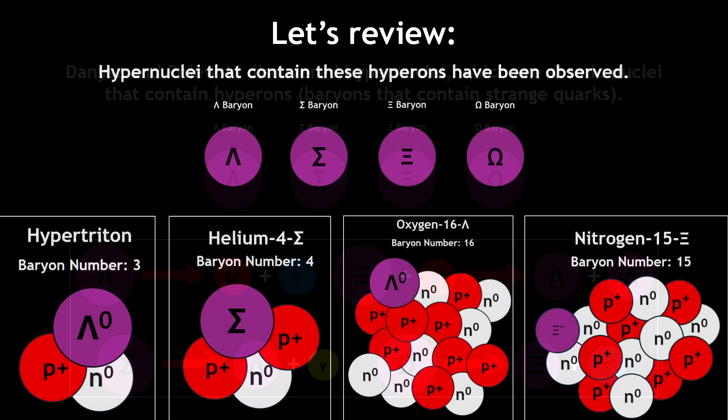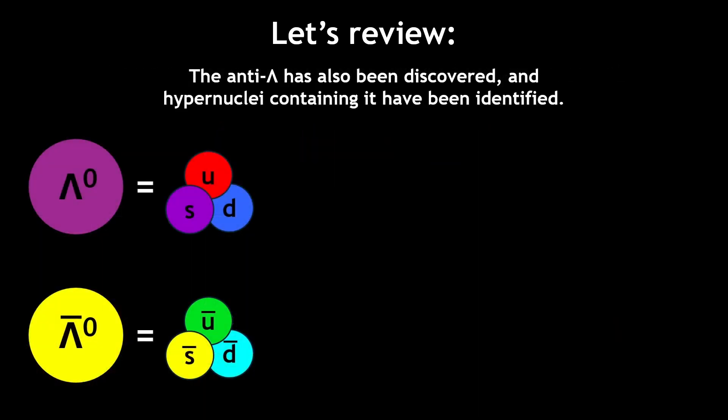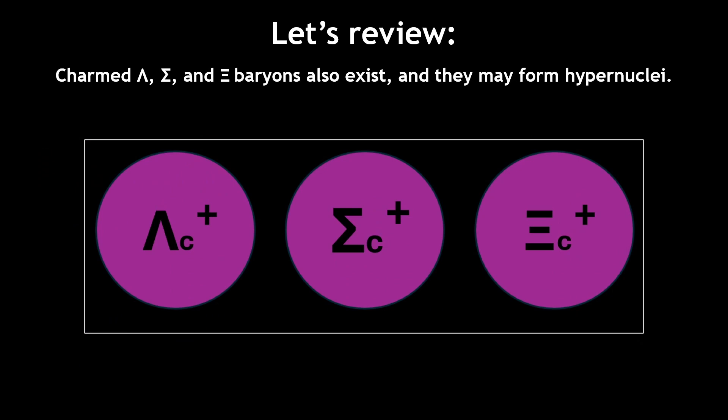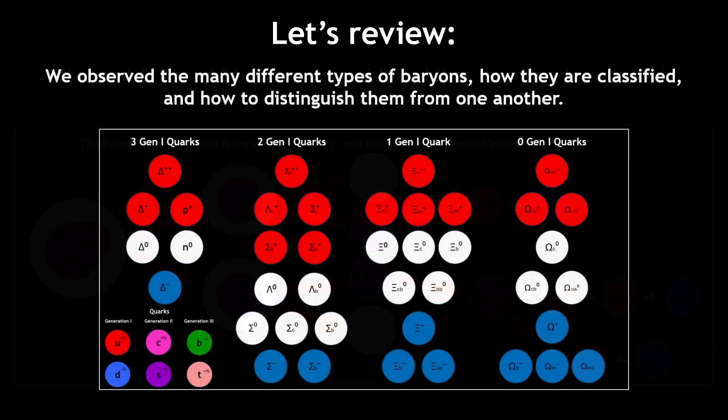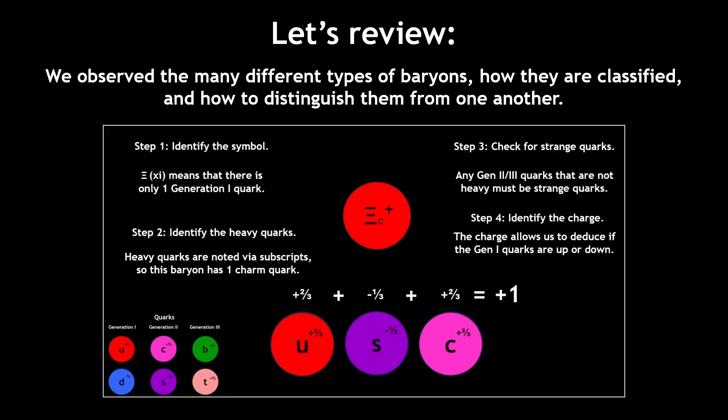Hypernuclei that contain these hyperons have been observed. The anti-lambda baryon has also been discovered, and hypernuclei containing it have been identified, giving more information about how antimatter behaves. Then, we observe charm baryons, and I propose my own theory for how the nitrogen-15 charm xi decays, if it exists. Finally, we identified the different types of baryons and their quark compositions, and how to distinguish them from one another.